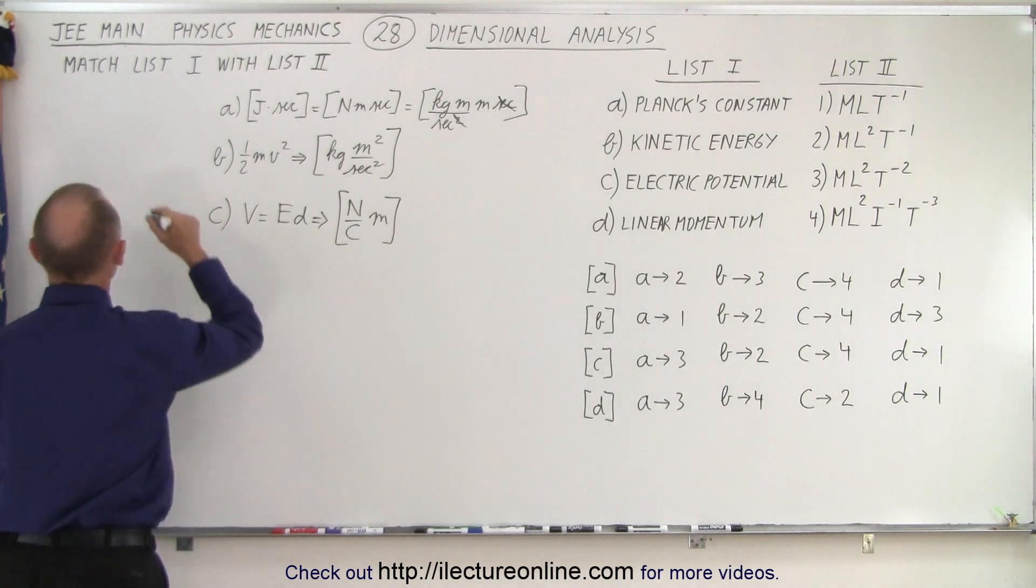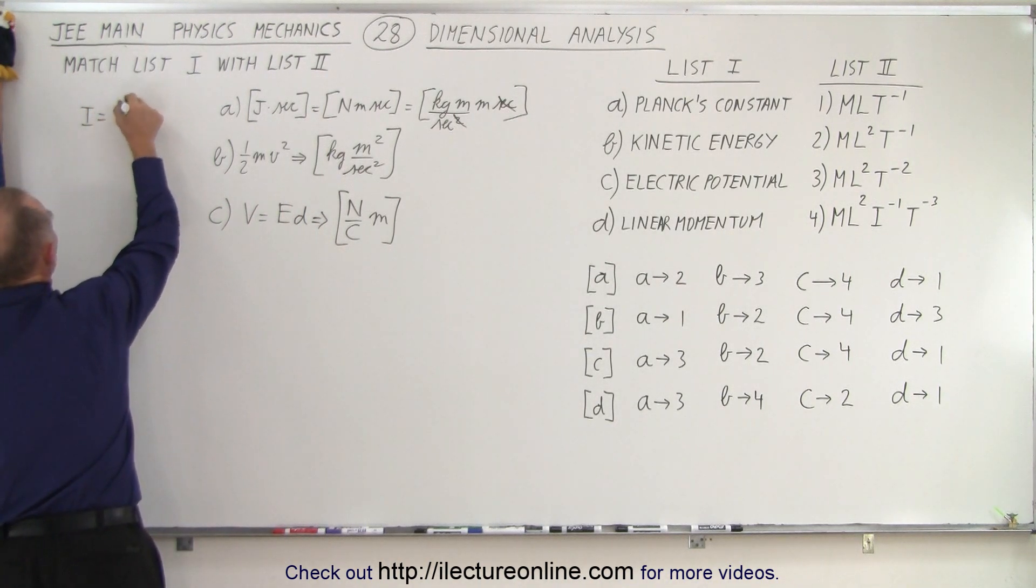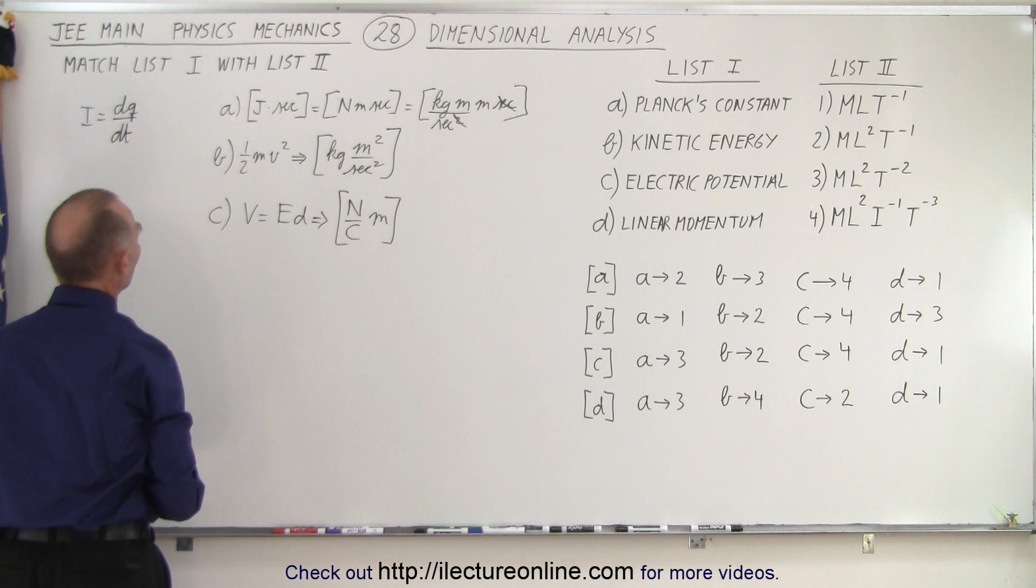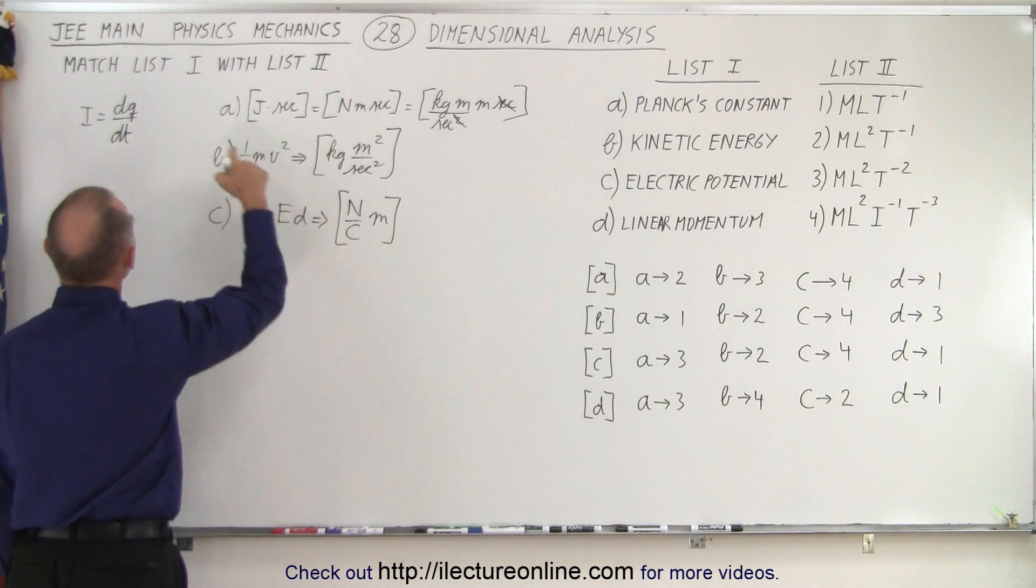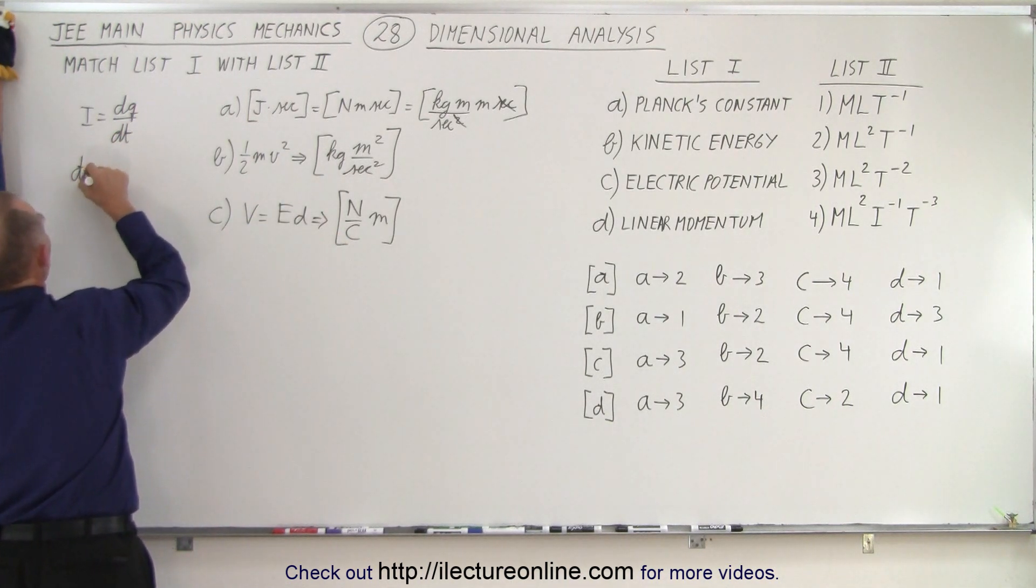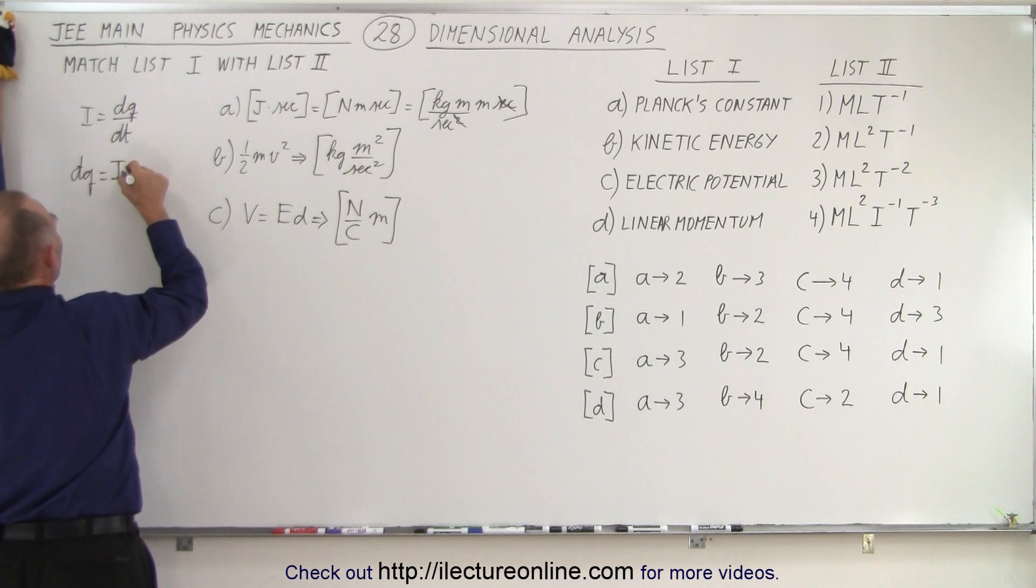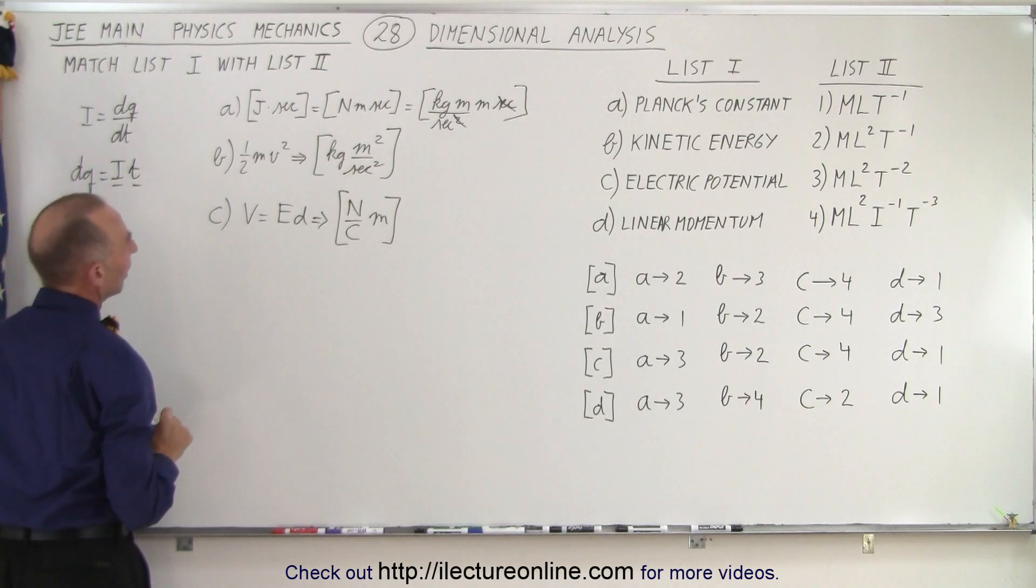Well, we know by definition that the current I is equal to dq/dt, the amount of current, the amount of charge passing per unit time. So we can see that coulomb, which is charge, can be written as current times time. Current times time.